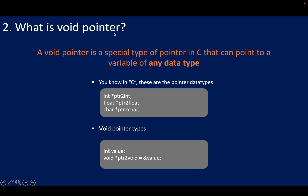Next, let us look at: what is a void pointer? A void pointer is a special type of pointer in C that can point to a variable of any data type. In C we have typed pointers — like pointer to integer, pointer to float, and pointer to character — and the value assigned must always match the data type of the pointer. But what if you want a single pointer that can refer to any data type? This is exactly where void pointer comes into play. You can declare a variable as a pointer to void and assign it a pointer to an integer, and the assignment will still work. In short, a void pointer is like a generic pointer in C that gives you the flexibility to point to different types of variables with the same pointer.